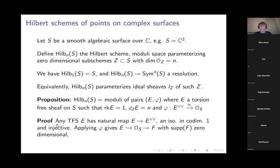Since the map is an isomorphism in codimension one, the cokernel of this inclusion — call it F — will necessarily have zero-dimensional support. So E is almost like a vector bundle but has some cokernel which is a coherent sheaf supported at some number of points.